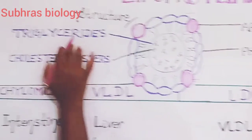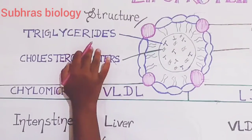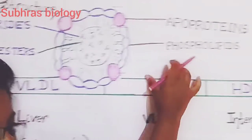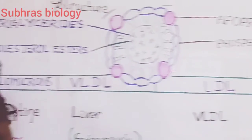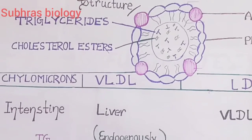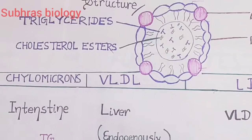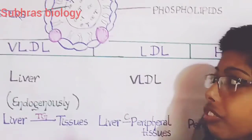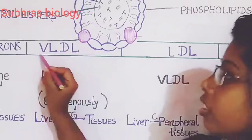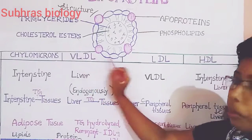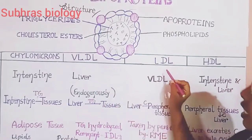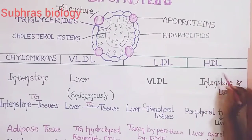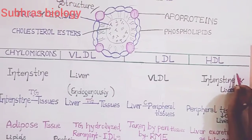This is all about the total structure of the lipoproteins, which contains triacylglycerols or triglycerides, cholesterol esters, apoproteins, and the phospholipid layers. There are four varieties of lipoproteins: Chylomicrons, VLDL (very low density lipoproteins), LDL (low density lipoproteins), and HDL (high density lipoproteins). These are the four varieties of the lipoproteins present in the human body.